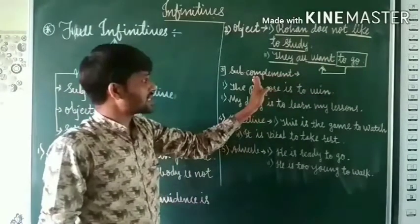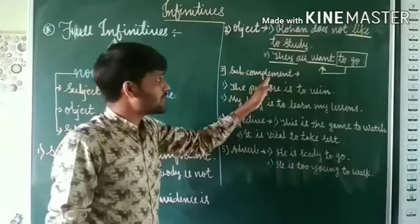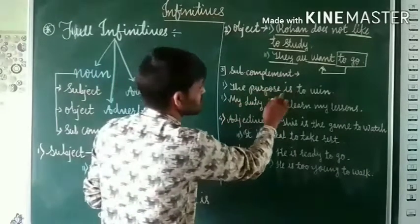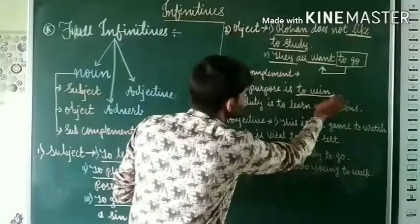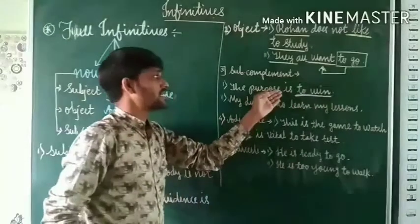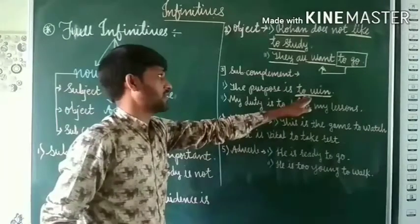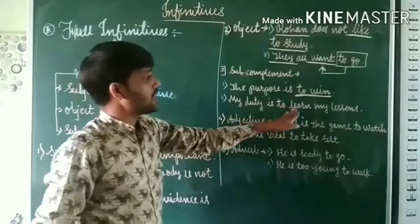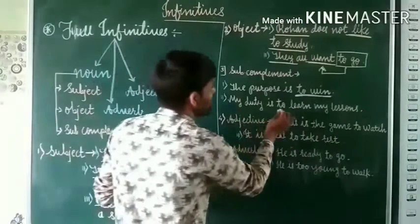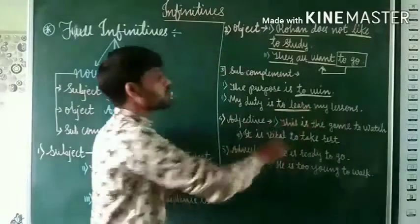Full infinitives can also be used as subject complements in the sentence. For example: 'The purpose is to win.' Here 'to win' is the subject complement, used as a full infinitive. In the same manner: 'My duty is to learn my lesson.' What is my duty? To learn my lesson. So 'to learn' is a subject complement in this sentence.